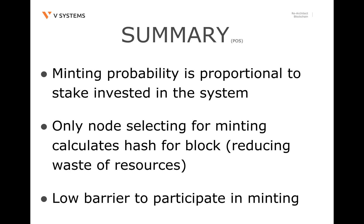To briefly summarise the points to take away about proof of stake: all nodes participating in the network can mint blocks. The probability that they are allowed to generate the next block and gain minting rewards is proportional to the amount of stake they have in the system. Only the node that is selected to generate a block needs to calculate the hash of a new block. This greatly reduces the energy wasted on maintaining the security of the system, as compared to proof of work. One main disadvantage of proof of stake is that malicious nodes can easily participate in the generation of blocks, as long as they accumulate enough stake in the system.